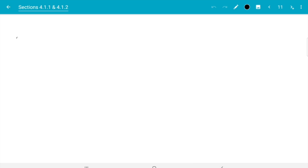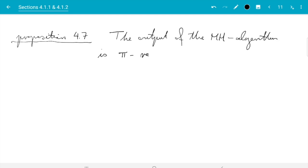So the statement we are going to prove, that is proposition 4.7. This says the output of the Metropolis-Hastings algorithm is pi reversible. In the proof, there are some steps. But again, it's not very difficult. So we can just do that now.